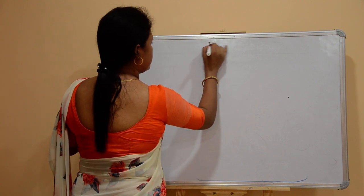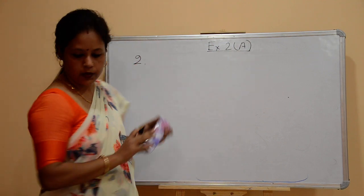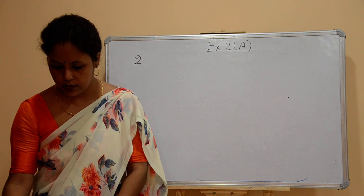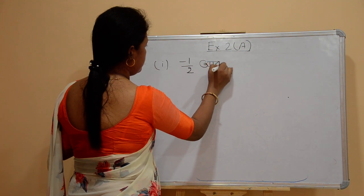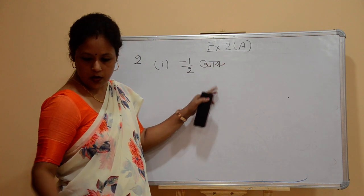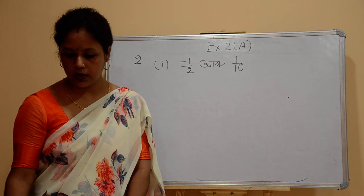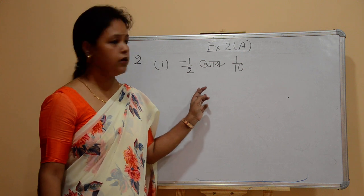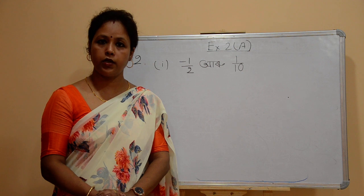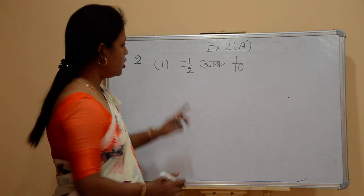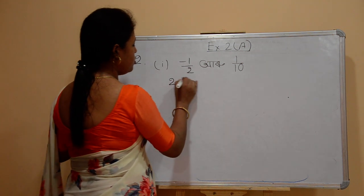Exercise 2a, question number 2. So that is 1 by 2, which is minus 1 by 2. If you get to the top, then you can just add 1 by 10. So if you have to add the top, then you can add 1 by 10. So if you have to add 2 by 10, then you will add 2 by 10. So if you add 1 by 10, it is equal to 1 by 10.